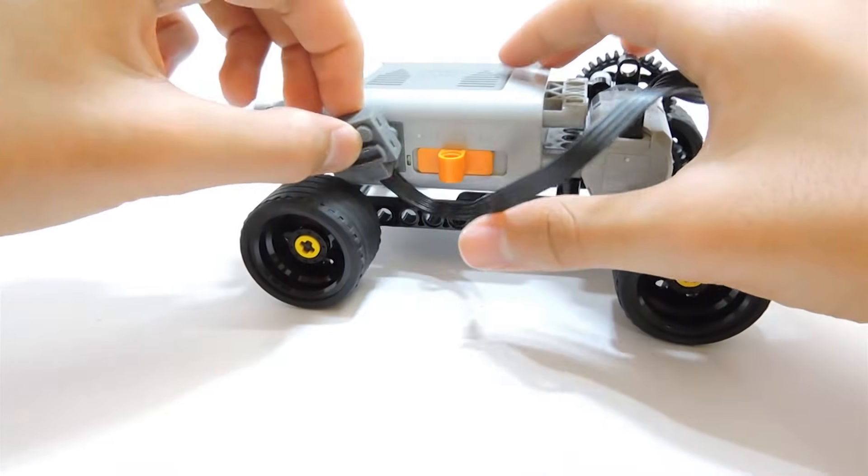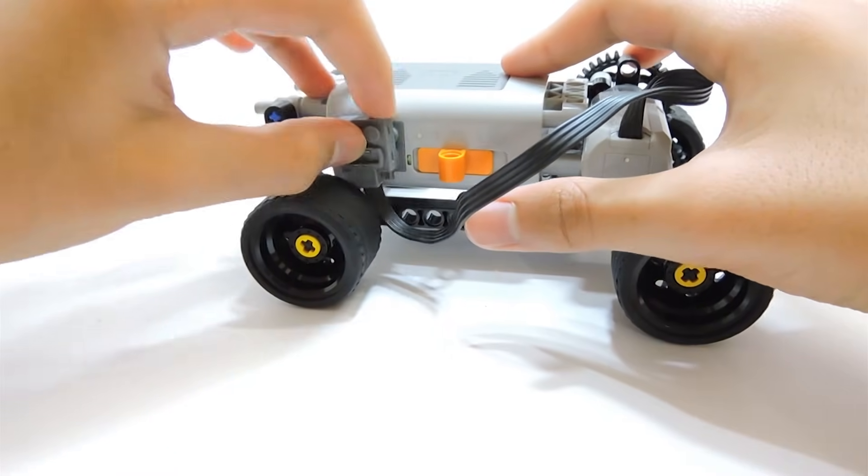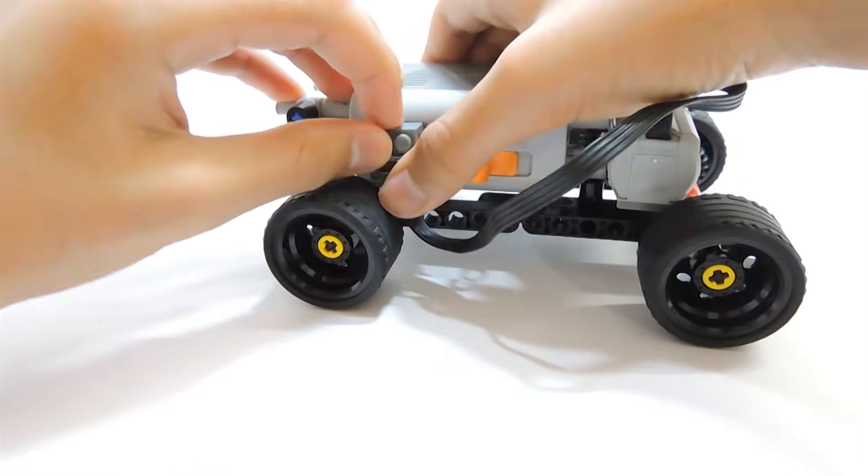And finally, connect the motor wire to the battery box and your very easy power functions car is ready.